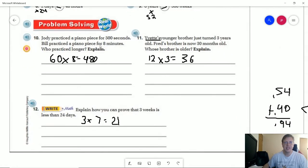For number 10, we are practicing a piano piece for 500 seconds compared to practicing it for eight minutes. And so my total for eight minutes is going to be 480 seconds. And so Jody practiced longer. And the reason that we know that is because we did this problem to figure out. So Jody practiced longer. Here's the reason why.